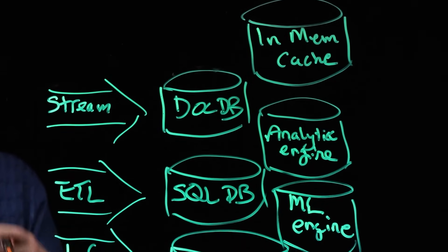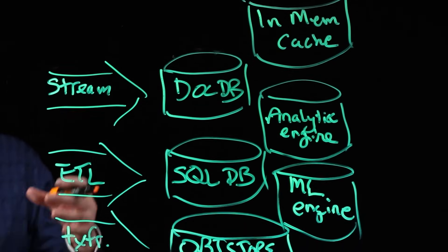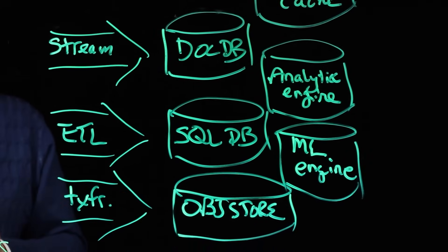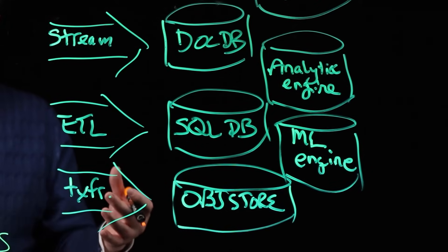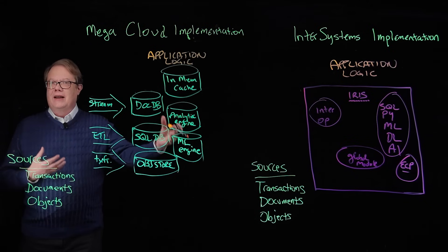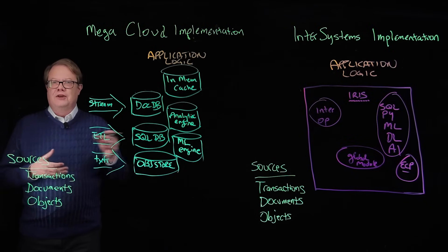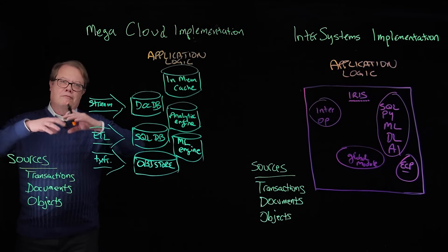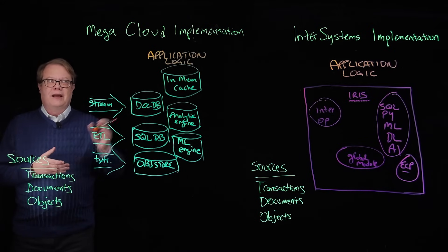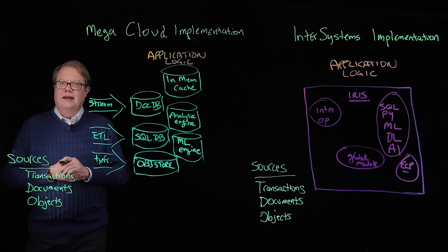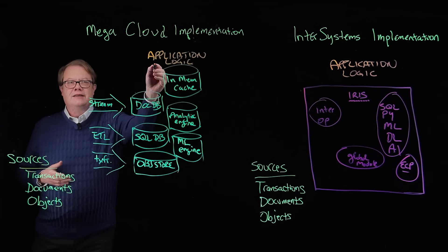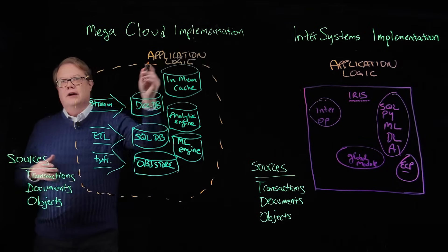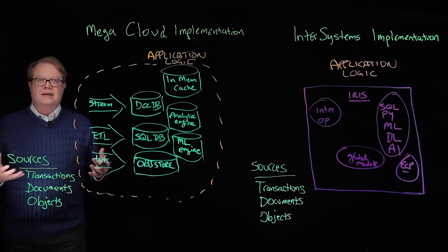Once you've got that data into your application space, you've got to land it somewhere. Depending on the kind of data you have, you may have a document database service, a persistence layer for SQL, or an object store. Then once you've got all of that, you want to do something with that data — you may need analytic engines, machine learning engines, generative AI, and wrapping around all of that you want performance, so you may add an in-memory cache.